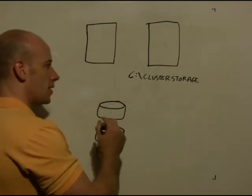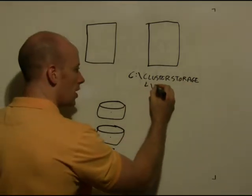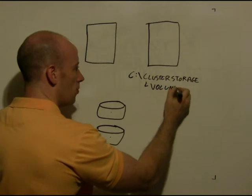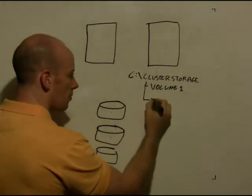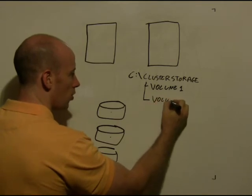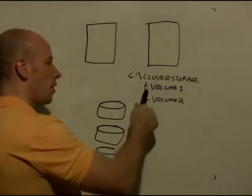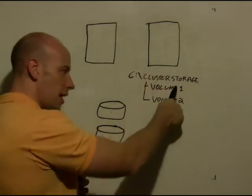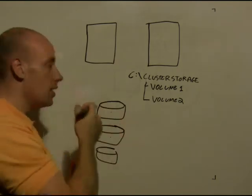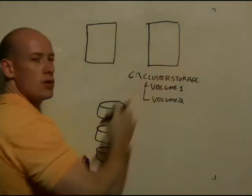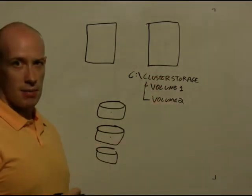This disk then becomes a child folder of cluster storage. And I will just see volume one. When I have this disk, this becomes a second folder called volume two. This cluster storage and these two subfolders, which are just links pointing to these LUNs, are visible on all the nodes in the cluster. They can all access this namespace at the same time.